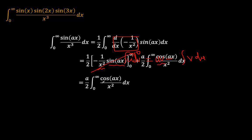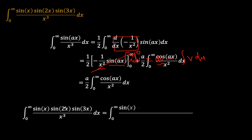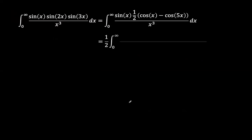Now, picking our original problem — sin(x)·sin(2x)·sin(3x) over x cubed — we try to expand this into single trigonometric function expressions. sin(2x)·sin(3x) gives us the difference between cos(x) and cos(5x), divided by 2. Then multiplying sin(x) across, we get half of cos(x)·sin(x) minus cos(5x)·sin(x), all over x cubed.